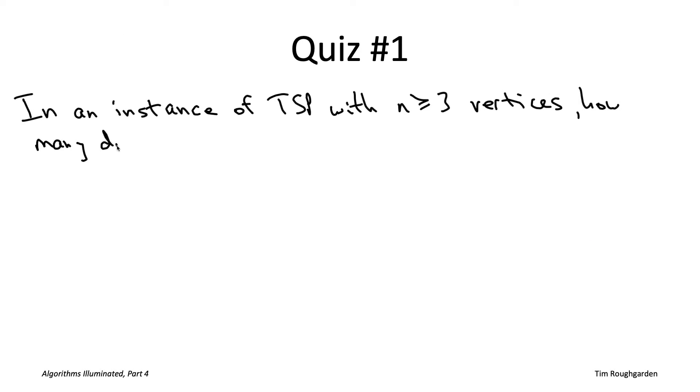So the question is, in a traveling salesman problem instance that has n vertices, where n is at least three, how many distinct traveling salesman tours are there? And here in the answers, the n with the exclamation part, that's the n factorial function. So that's the product of all of the integers between one and n. For example, three factorial is six, four factorial is 24, five factorial is 120, and so on. Note that the factorial function grows even faster than the function two to the n. As usual, when I give you a quiz, I encourage you to pause the video here and think about the quiz for a while, then come up with your guess of the answer and then unpause the video and we'll discuss the solution.